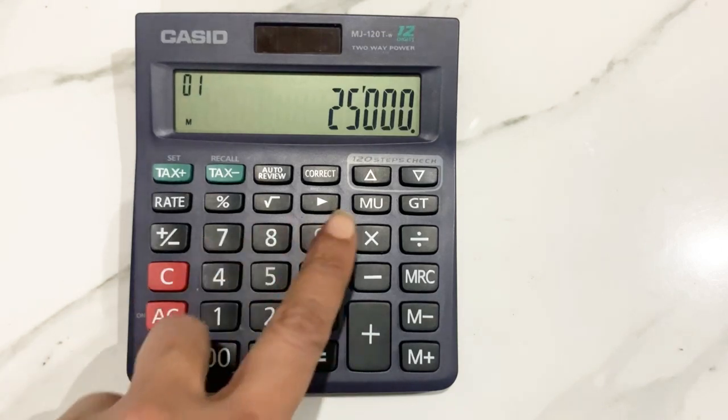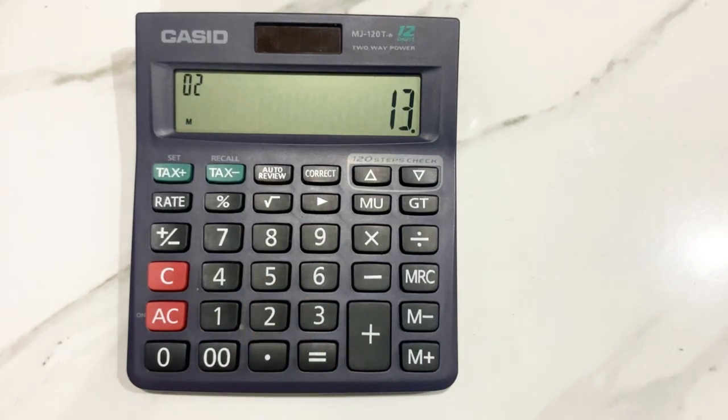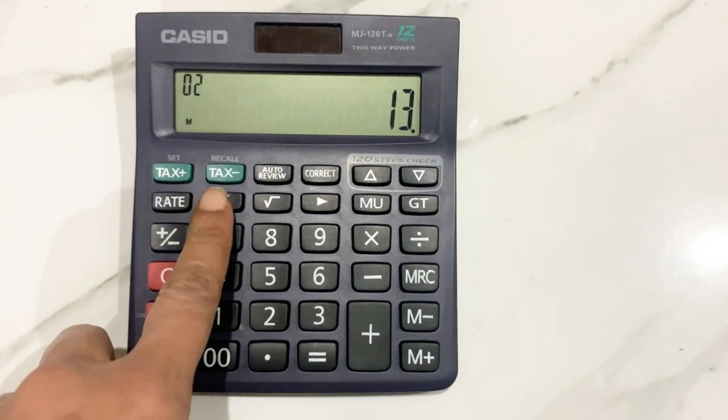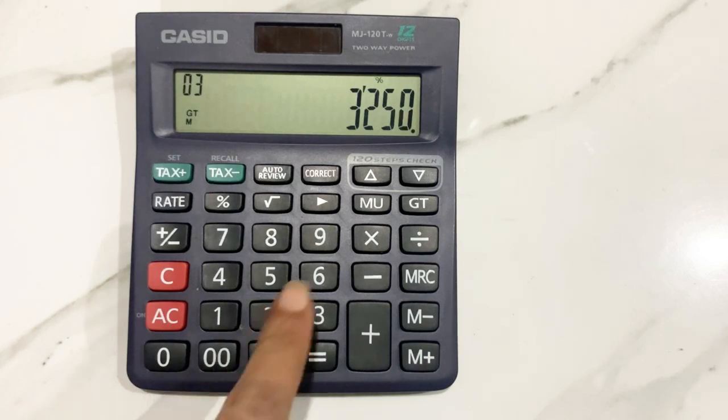So in the first step we will multiply it with 13. In the next step we will press the percentage button. Now we will press the minus sign and at the end we will press the equal to sign.